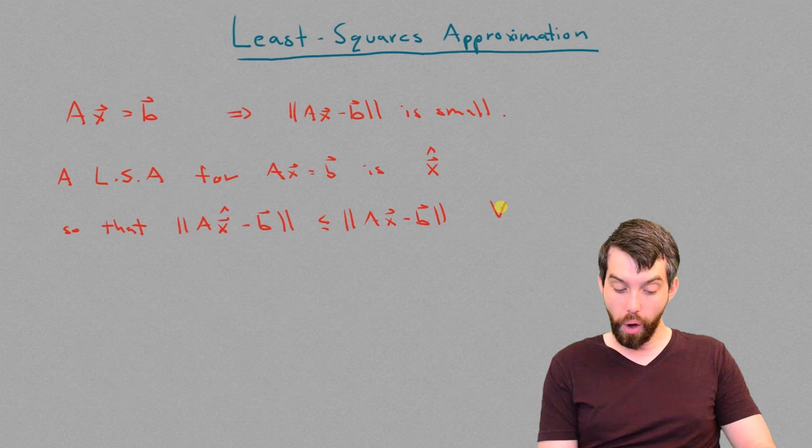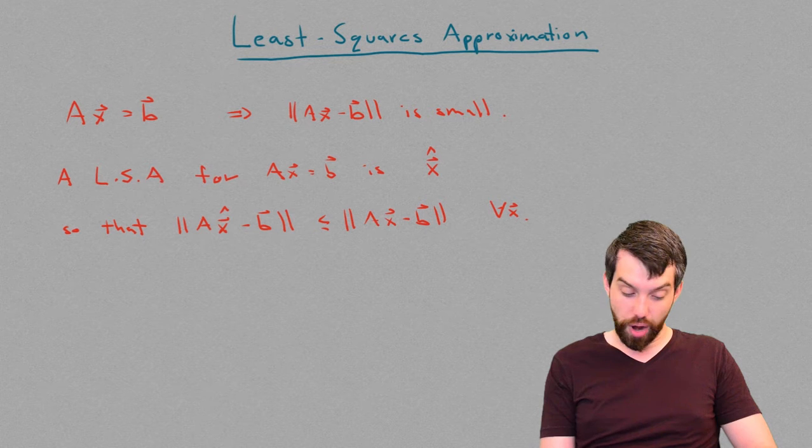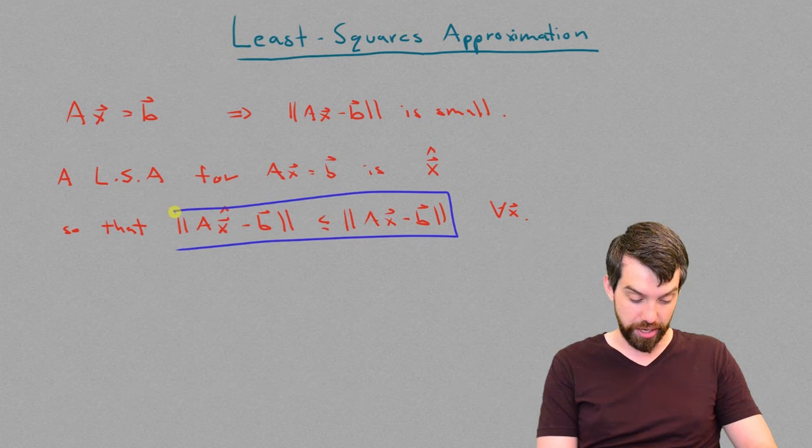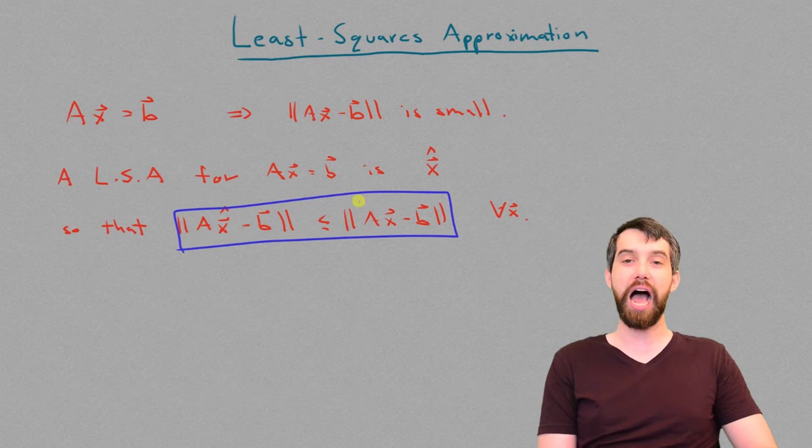That this is smaller than this for all other values x. That's what I mean when I'm trying to have a least squares approximation, is that its distance to b is smaller than any other distance.